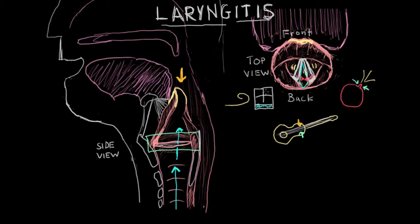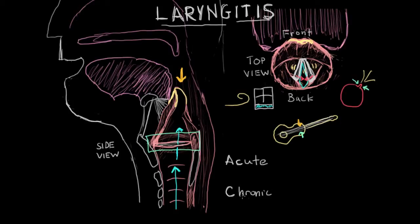There are two main types of laryngitis. Acute laryngitis, meaning laryngitis that occurs suddenly, can go away fairly quickly — within days, maybe a week or so. And chronic laryngitis, which lasts for a longer period of time — two weeks or longer. The causes of these two are very similar.